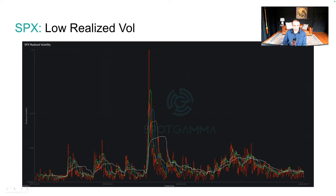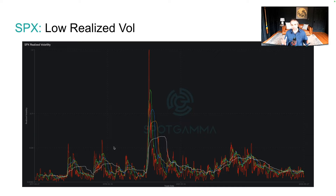You have to go back to 2019 to see these levels of realized volatility, which tells us the market is moving less now than it has over the last couple of years. This is low, but it doesn't seem to be an aberration.